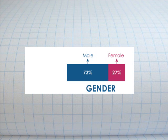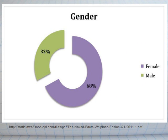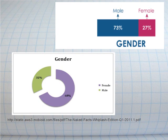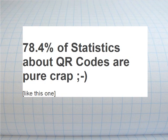But ladies, don't feel left out — it turns out Mopioid says that 68% are female. So something doesn't compute: 73% male, 68% female. I've come up with my own research and decided that 78.4% of statistics about QR codes are pure crap. You don't really need to put a lot of emphasis in the statistics, other than the fact that it is growing like wildfire. The statistics about growth are all huge numbers — growing fast and furious.